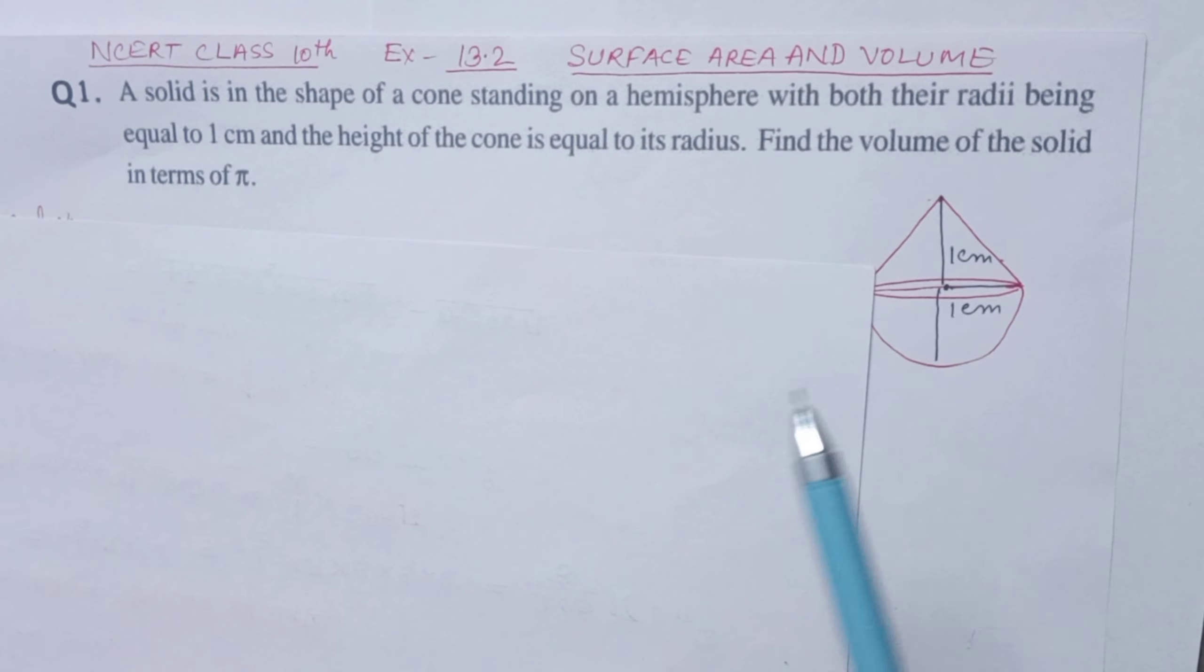Now the question is, find the volume of the solid in terms of pi. It is very easy. We will simply add the volume of the cone and the volume of the hemisphere. This way we'll get the volume of the complete solid.